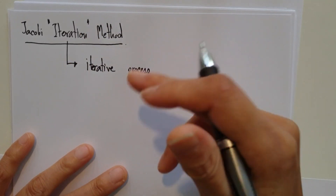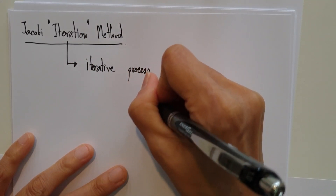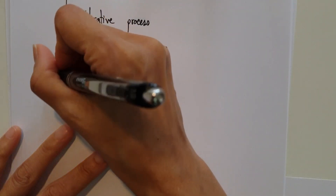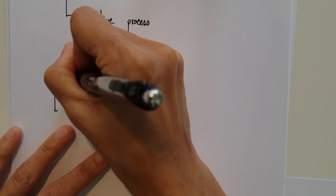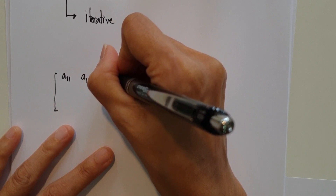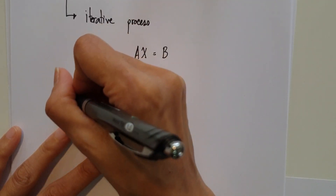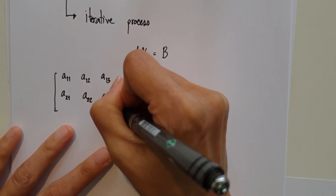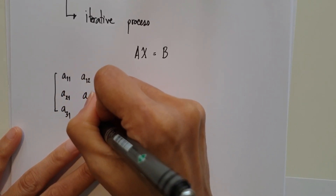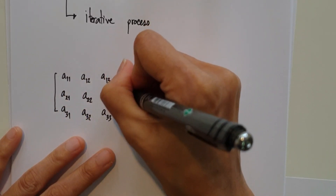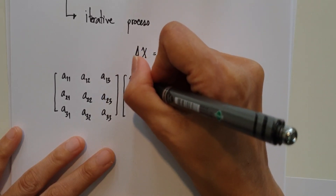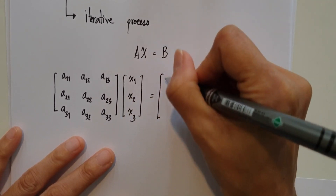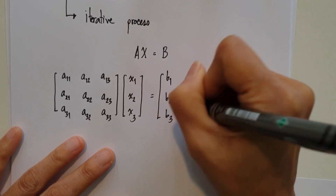We will start with the system of equations AX equal to B. If we write matrix A, it would be A11, A12 — assume this is a 3x3 matrix — with second row A21, A22, A23, and third row A31, A32, A33. Matrix X is X1, X2, X3, equal to B1, B2, B3.